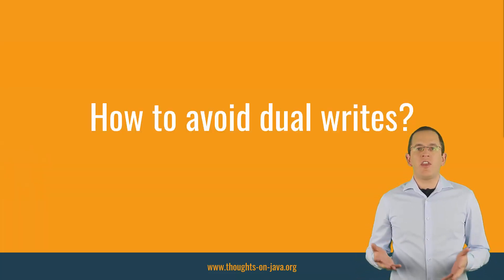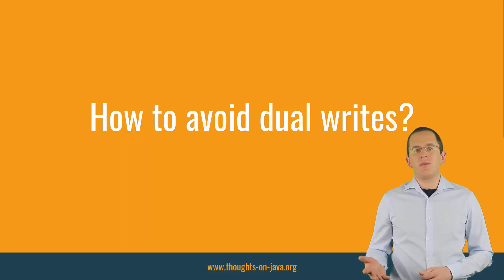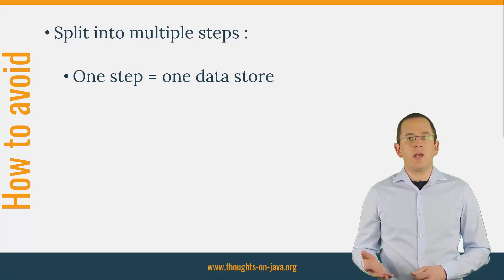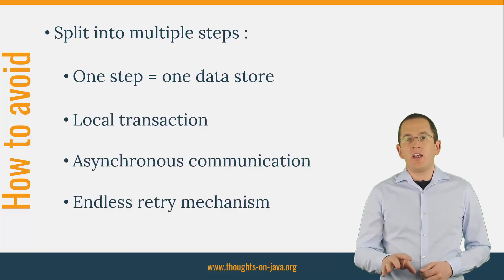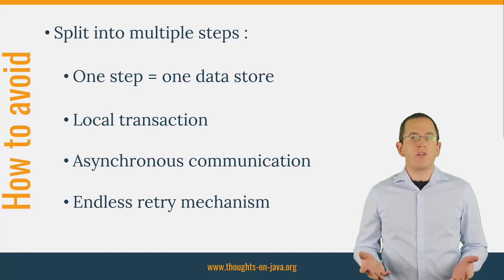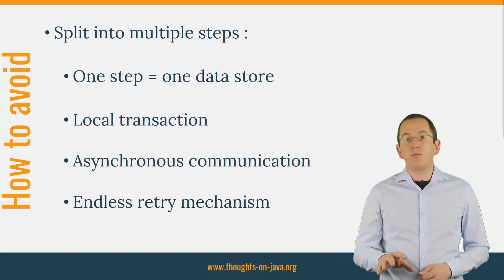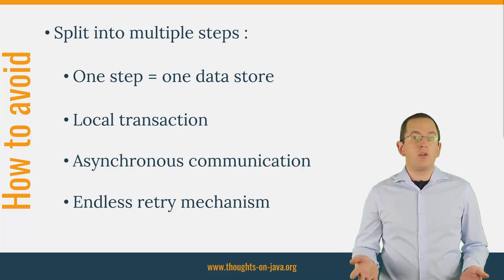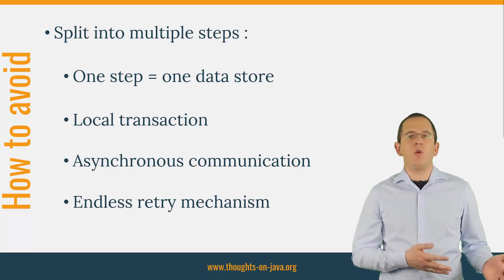You can choose between a few approaches that help you avoid dual writes, but be aware that without a distributed transaction, you can only build an eventually consistent system. The general idea is to split the process into multiple steps where each step only operates with one datastore — either the database or Apache Kafka. This enables you to use a local transaction, asynchronous communication, and an asynchronous potentially-endless retry mechanism. If you only want to replicate data between services or inform other services that an event occurred, you can use the outbox pattern with a change data capture implementation like Debezium. And if you need a consistent write operation involving multiple services, you can use the Saga pattern.